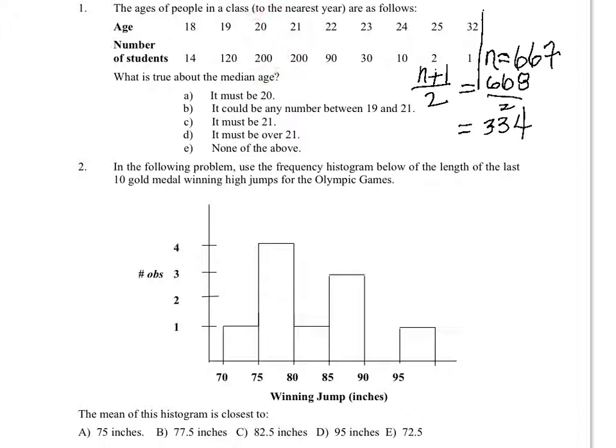So that means that the 334th observation would have age 20. So the answer is it must be 20.